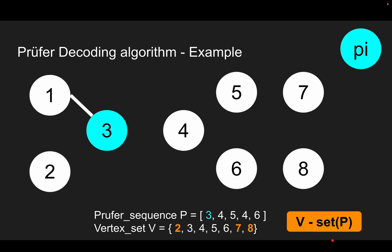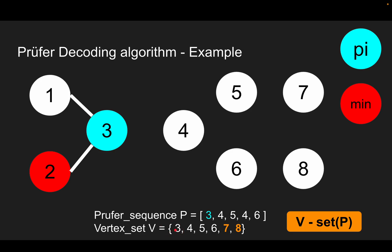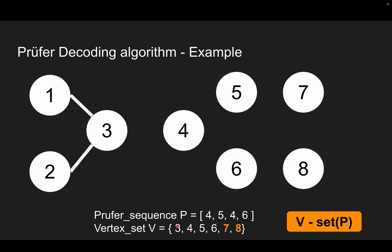For the next iteration, pi is 3 again. The smallest element in the yellow set is 2. We connect the smallest one with pi, remove pi from P, and remove the smallest one from V. After removing pi, since 3 no longer exists in P, 3 now becomes an element of the yellow set.